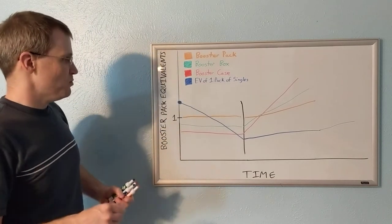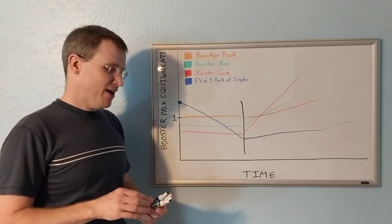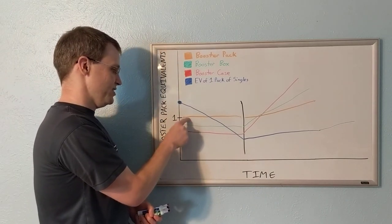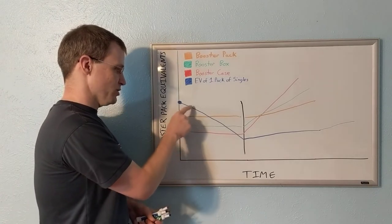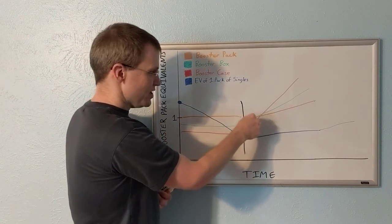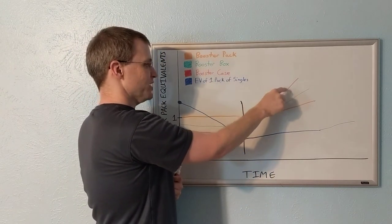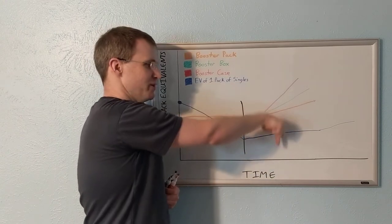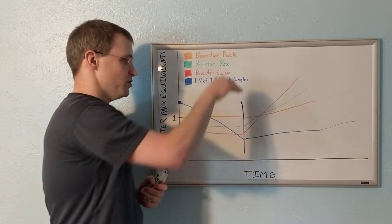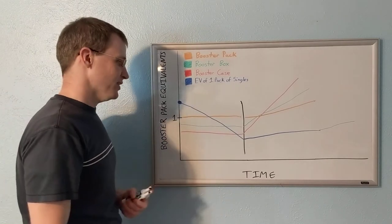This is why opening sealed products almost always destroys value, because you're always jumping from here to here to here to here, from red to green to orange to blue. Whenever you're past some point slightly after they go out of print, whenever you make that jump from red to green to orange to blue, you're going down in value. Because again, booster pack equivalent value. You're always going to be going down, taking steps down as you open those products when they're out of print.